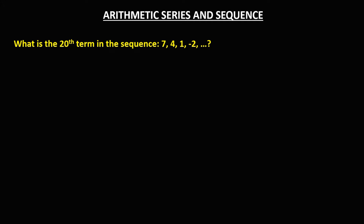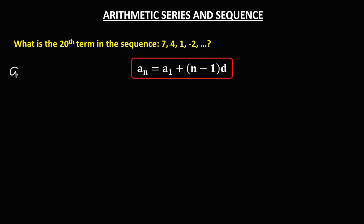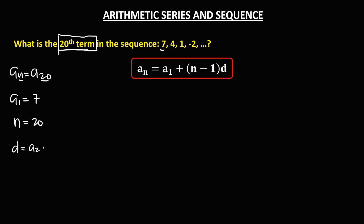For this next problem, we need to find the 20th term in the sequence. From the formula, a sub n is the last term — since we're looking for the 20th term, n equals 20. The first term a sub 1 is 7. The common difference is a sub 2 minus a sub 1: that's 4 minus 7, so d equals negative 3.